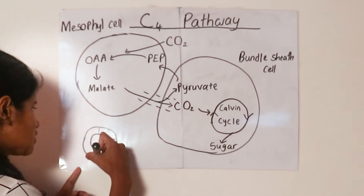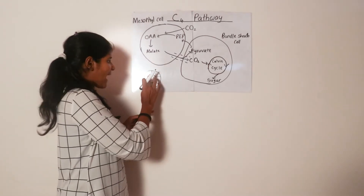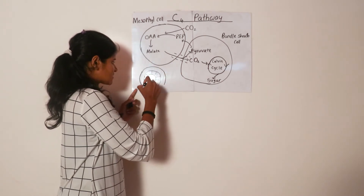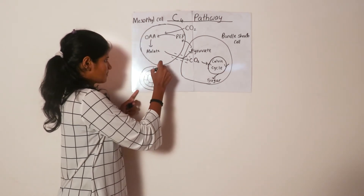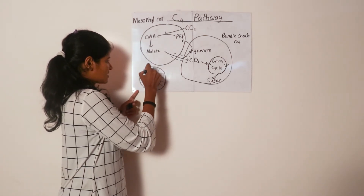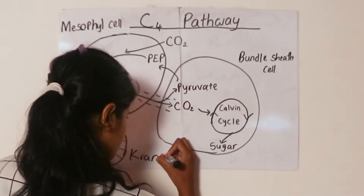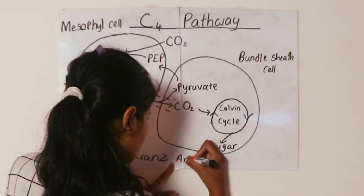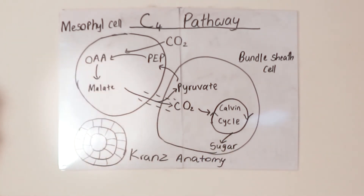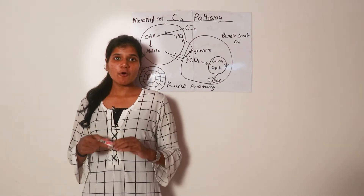In Kranz anatomy, the vascular bundle is enclosed by bundle sheath cells, and then the whole structure — the bundle sheath cells and the vascular bundle — is enclosed by mesophyll cells. This organization is called Kranz anatomy, and it is fundamental to the carbon dioxide concentration mechanism in C4 plants.